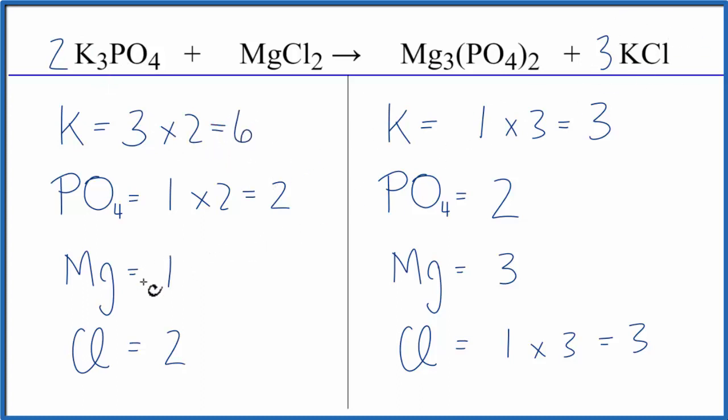Let's look at the magnesiums next. We have three here and one here, so let's put a coefficient of three. One times three, that equals three, and chlorine, two times the three, that equals six.